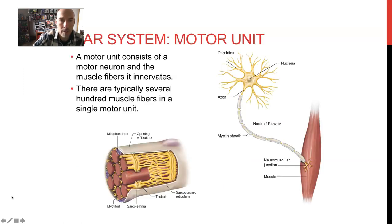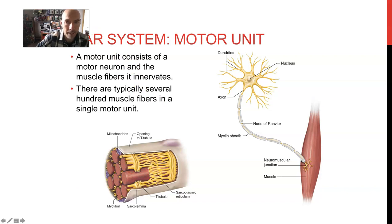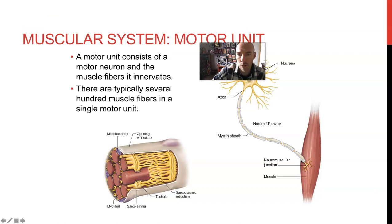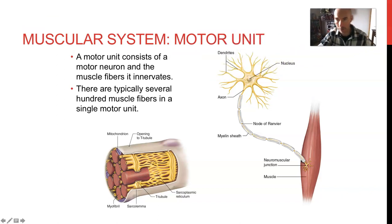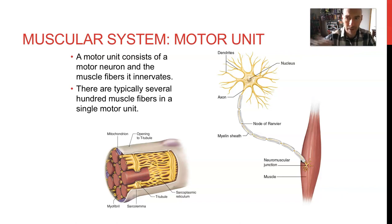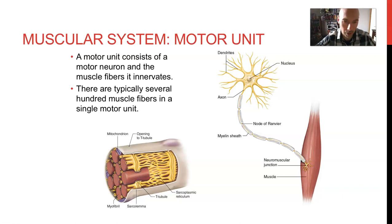Strength and conditioning is typically the phrase used to describe the training of athletes, to distinguish from your average fitness client. A fitness client might be interested in getting healthier or losing weight, whereas an athlete's main goal is typically to improve their performance in their sport. The whole purpose of this class is to learn how to assess and train people to become better performers.